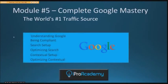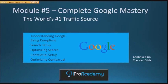Module 5 is complete Google mastery. Google is the number one traffic source in the world. This module includes sections on navigating Google's ad policy and staying out of trouble — since there are many hidden pages and help documents that aren't always helpful. It covers understanding the Google search network, Google language, and Google's quality score.